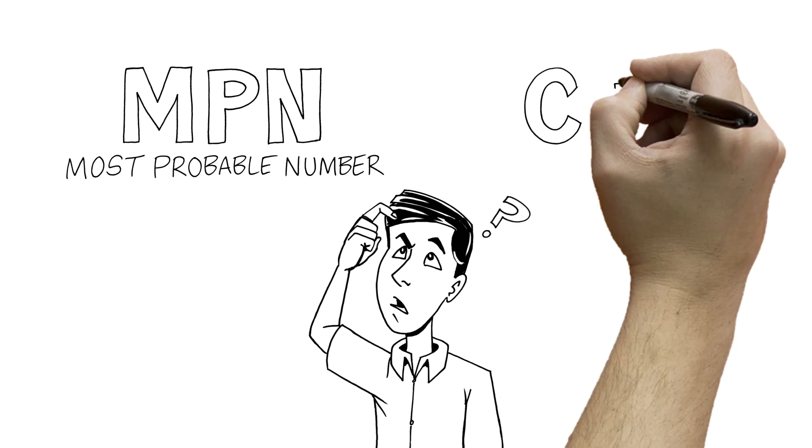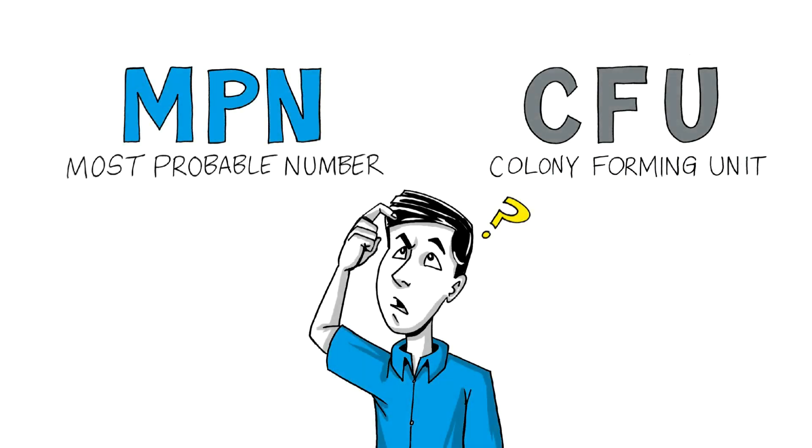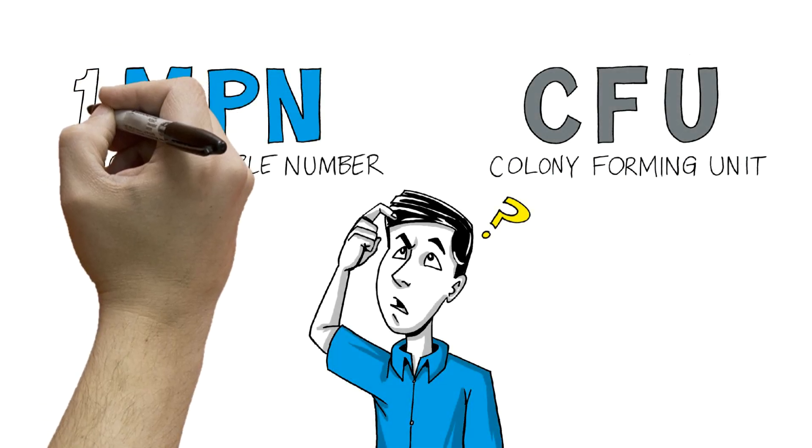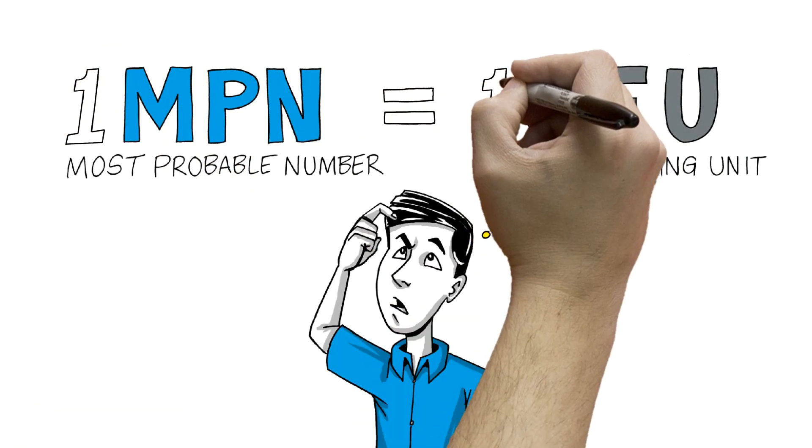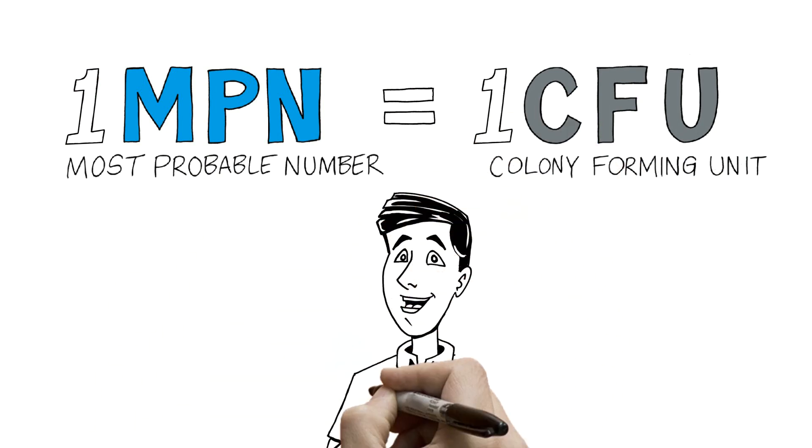An MPN is just like a CFU, or Colony Forming Unit. Both measure the number of bacteria in a water sample. One MPN is equal to one CFU. Both are recognized by a variety of scientific and regulatory bodies worldwide.